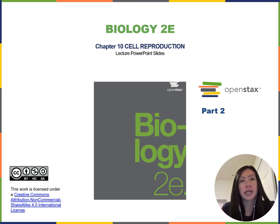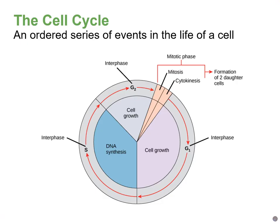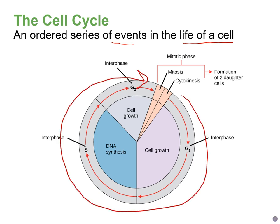Welcome back to chapter 10. In the second video, we're going to look at the cell cycle and mitosis. The cell cycle looks at the series of events in order during the life of a cell, and there are two major components: interphase, which takes up most of the cell cycle, and mitosis.